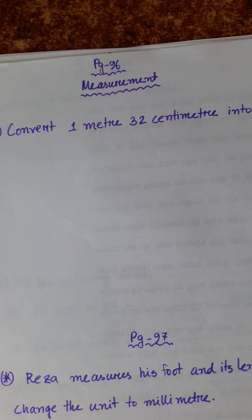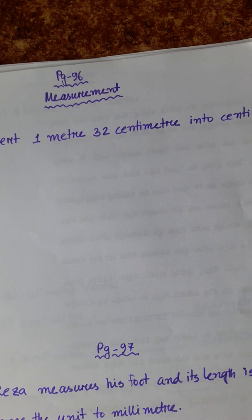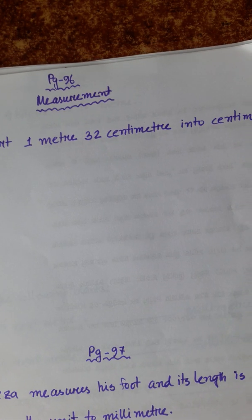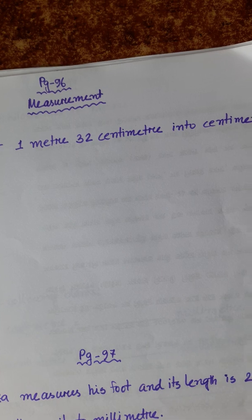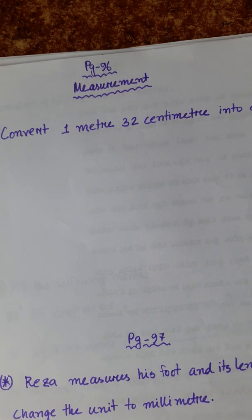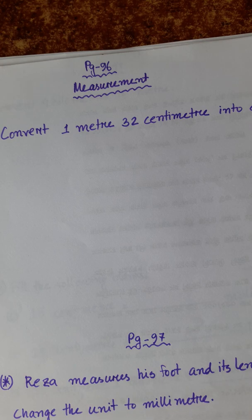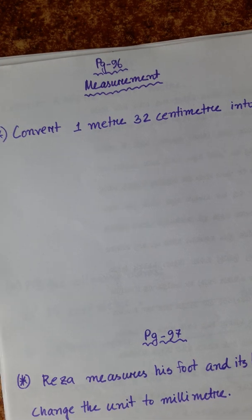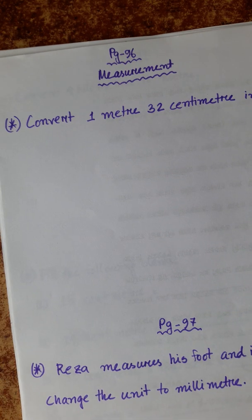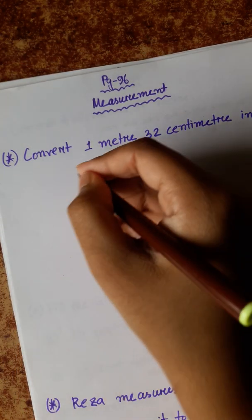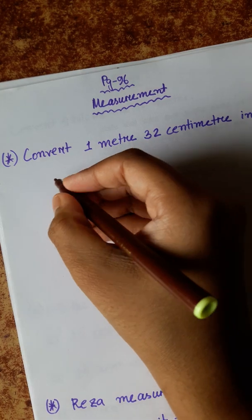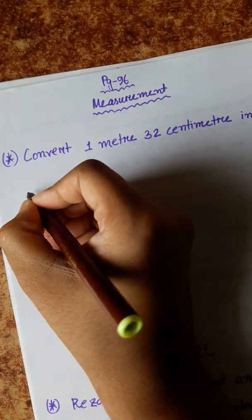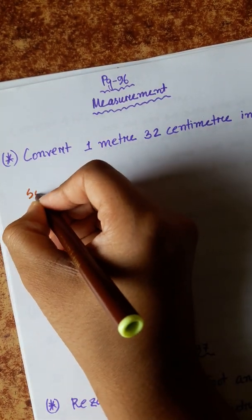Convert 1 meter 32 centimeters into centimeters. We have to convert 1 meter and 32 centimeters totally into centimeters. Let's write the solution.